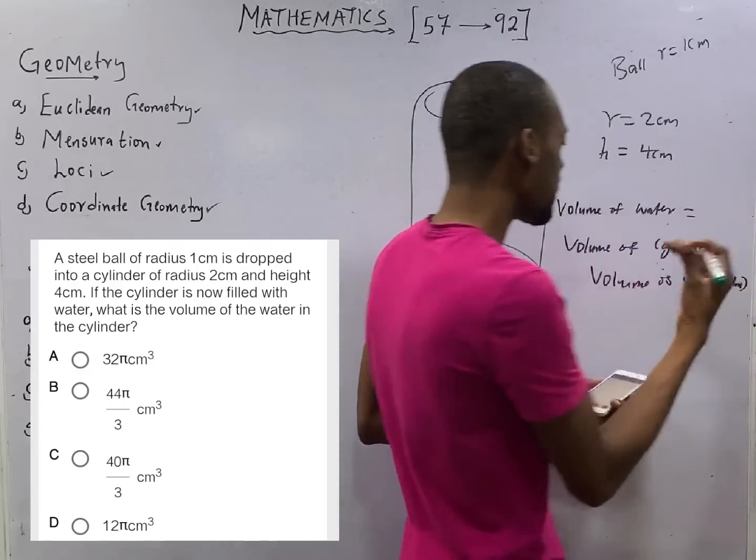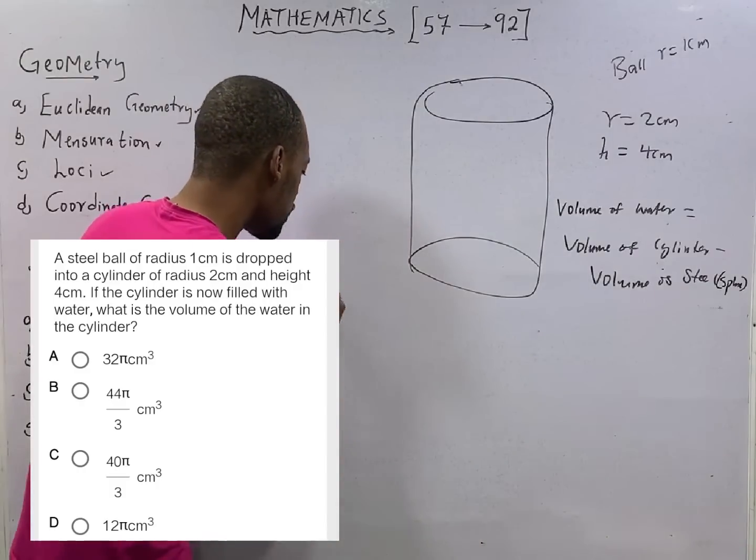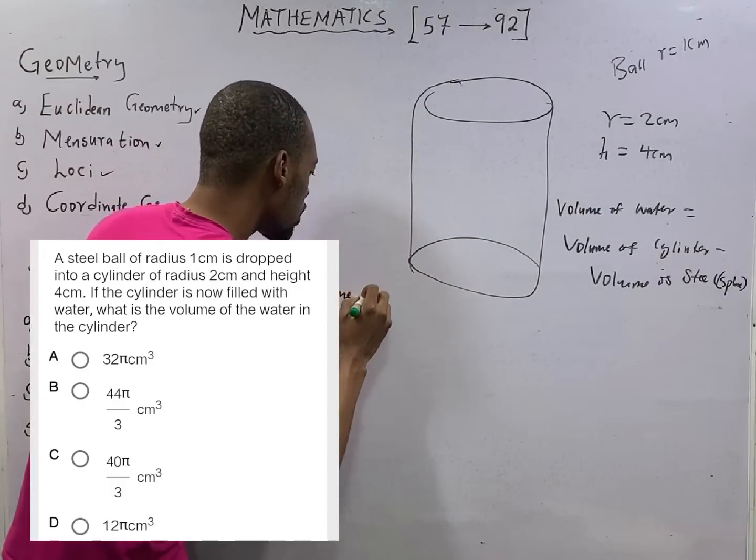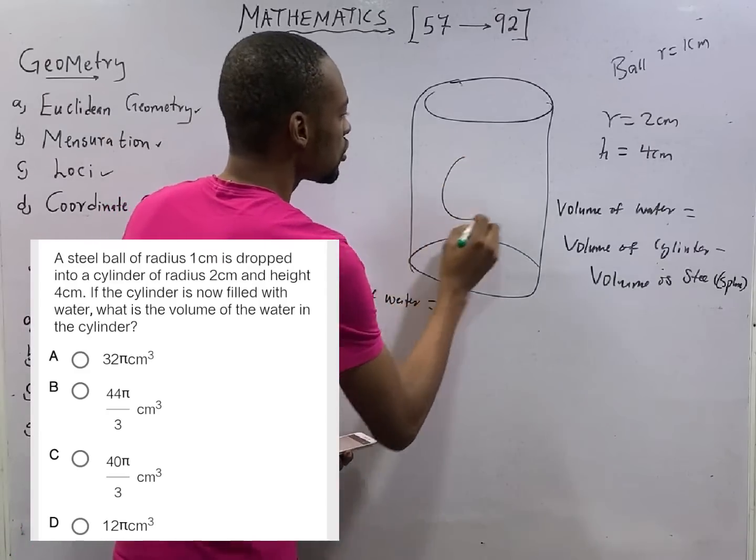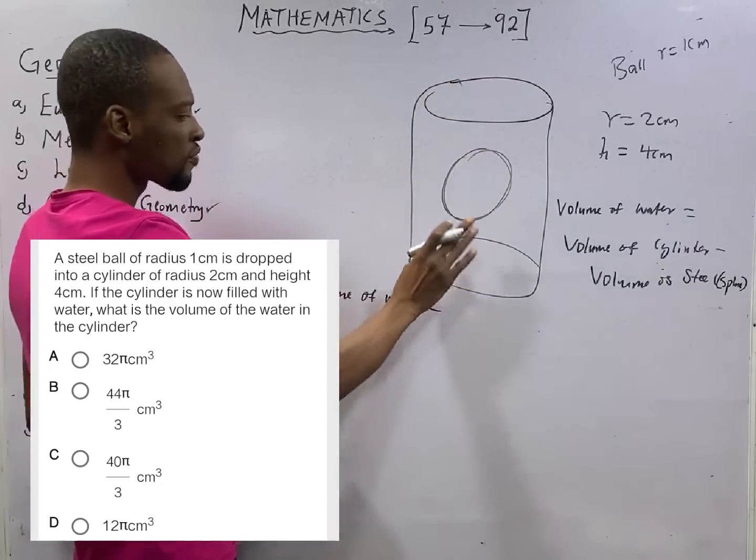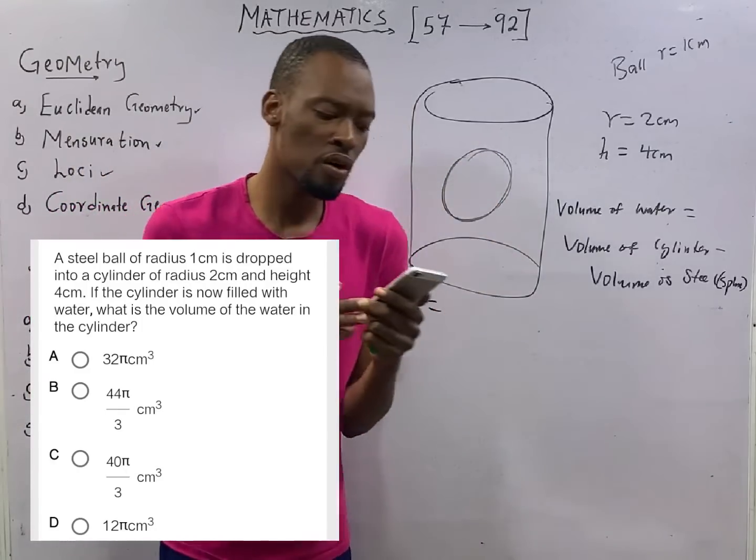So if this sphere is dropped into a cylinder, the volume of water will simply be equals the volume of the cylinder minus the volume of the ball or the volume of the sphere.